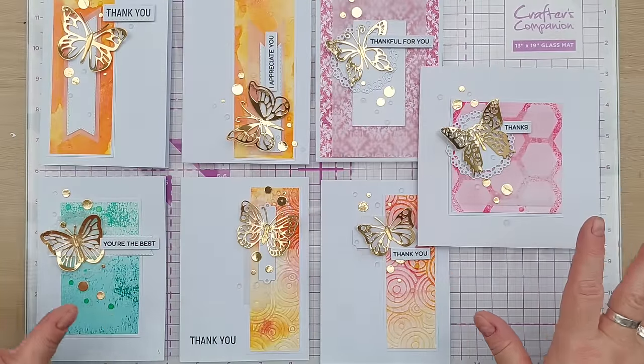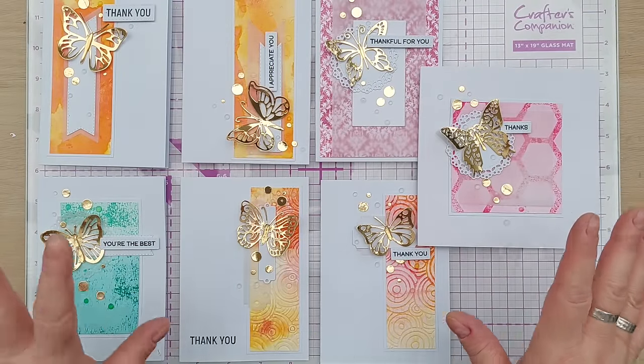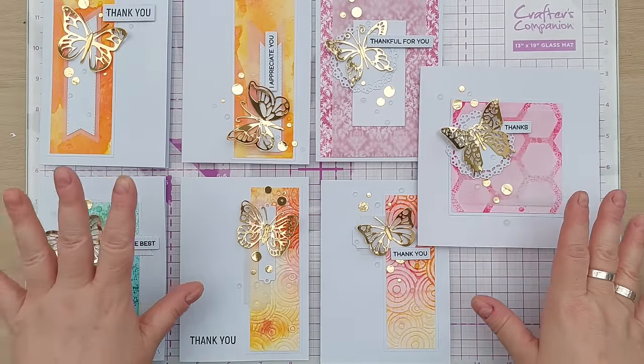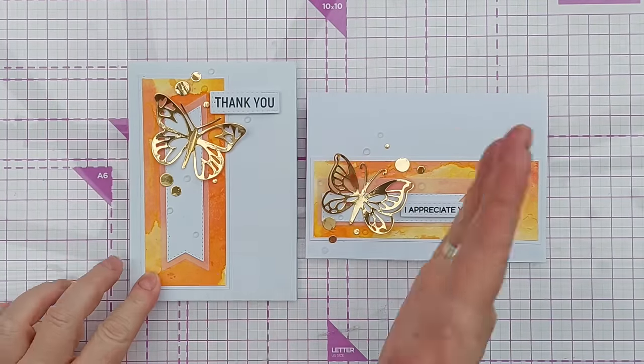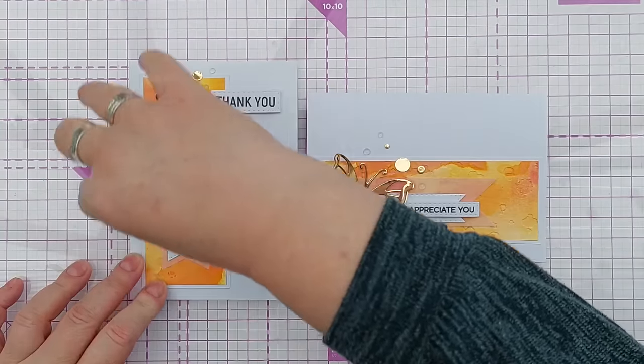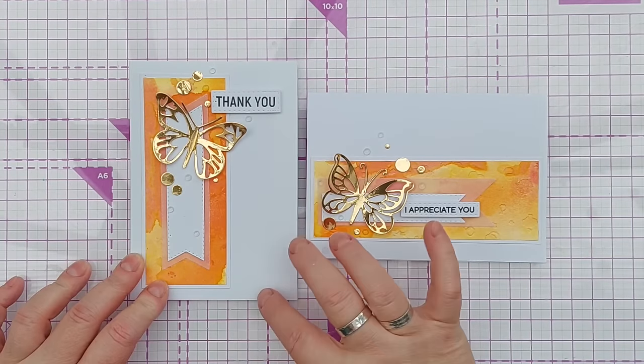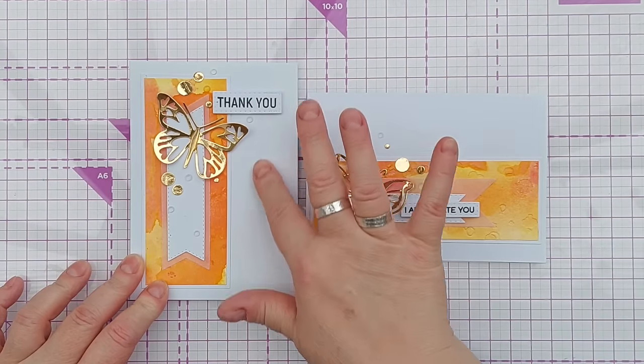And here we have all the cards that I made with the backgrounds that I toned down today. These two cards were made with the background that I chopped in half. This was the one where I placed the orange panel to the left hand side of the card and introduced this white space here.